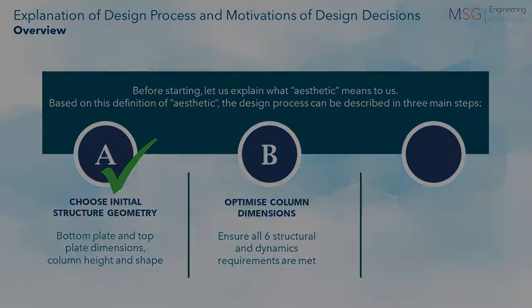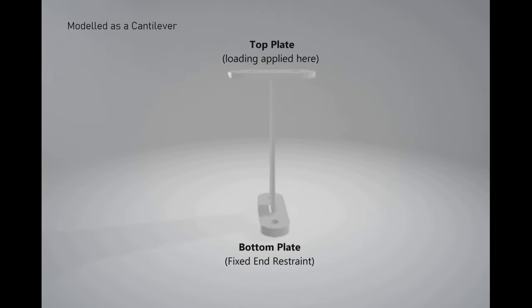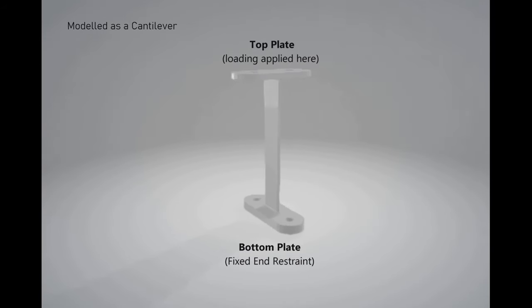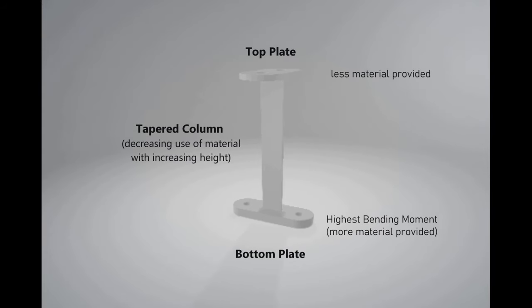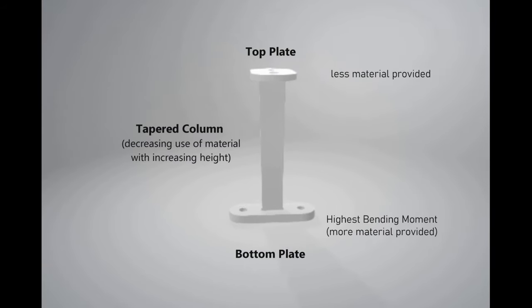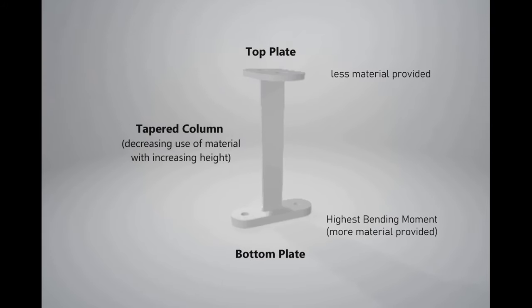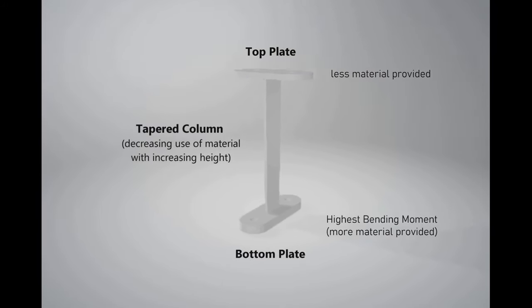Optimizing column dimensions. We model the column as a cantilever structure fixed at the bottom, with loading applied at the top. Considering the variation in bending moment of the column — with the greatest at the bottom and weakest at the top — the column is expected to have the most material at the base and least at the top. Hence, it is expected to be a tapered column.